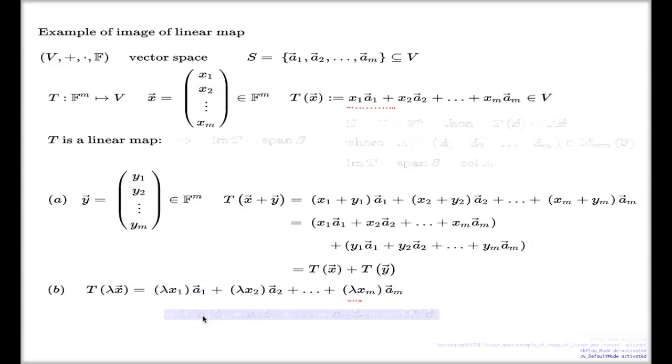Now again, I do the rearrangement. I just take this common factor lambda as a common factor. Inside, what is left inside is x1 a1, x2 a2, xm am. And this bracket is precisely the definition of the T action. Here's my verification that this map T constructed like... And that's quite an arbitrary map. You can alter the map by choosing different sets here or vectors. Choosing different sets here will be a different map. But every time it will be a linear map.